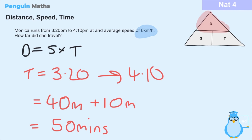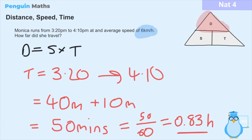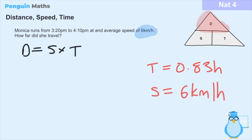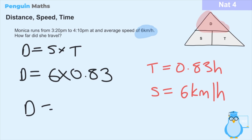Now we consider units. Speed is in kilometers per hour, so the distance will be in kilometers and the time must also be in hours. We convert 50 minutes to hours by dividing by 60, giving approximately 0.83 hours. We can then say distance equals 6 multiplied by 0.83, which gives us 5 kilometers.